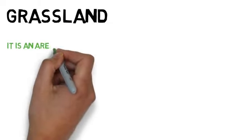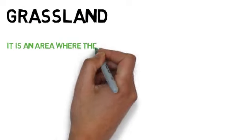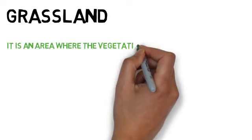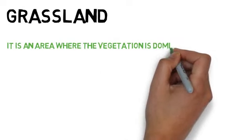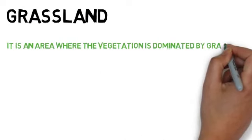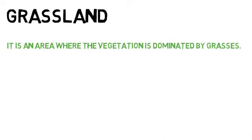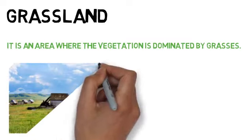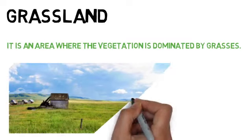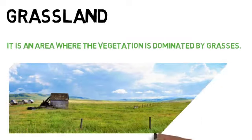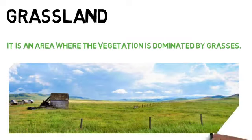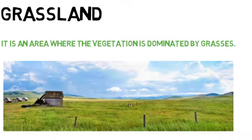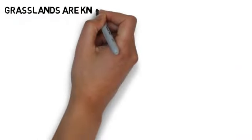Students, grassland is an area where the vegetation is dominated by grasses. You must have seen these kind of pictures as wallpaper, but they exist in real.